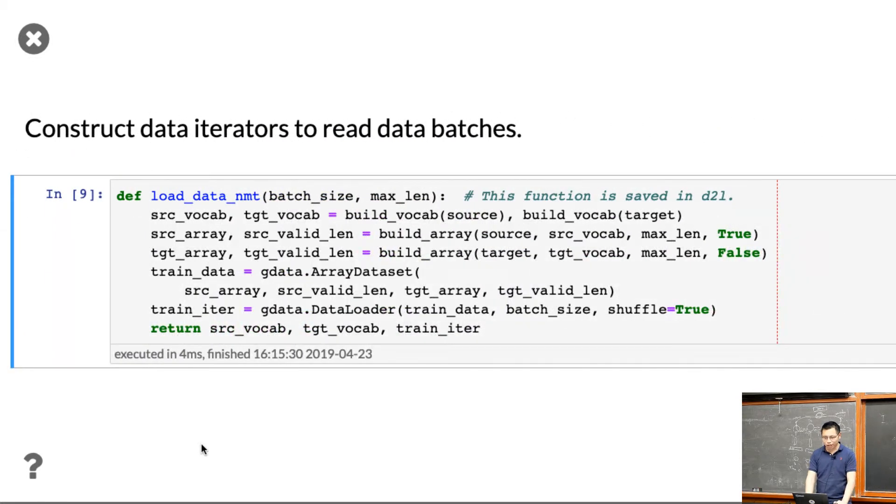Okay, so finally, loading the dataset is also pretty similar to before. The only thing here is that we need to build source vocabulary and a target vocabulary because they share different words for different languages. Similarly, we have the source arrays, the source valid length, and target arrays, target valid length. So this dataset has four inputs: the source array, which is a bunch of tokens; the valid length, the number of non-padding tokens in each example; the target array; and the target valid length. There are four things here. Okay? So this is another difference compared to before. The input data will be a little bit more complicated.